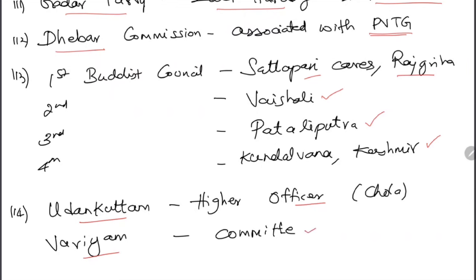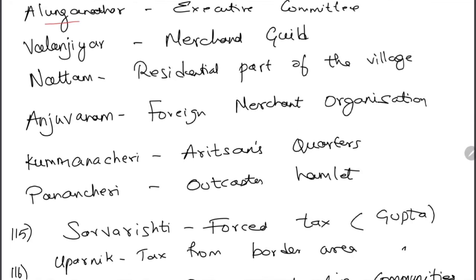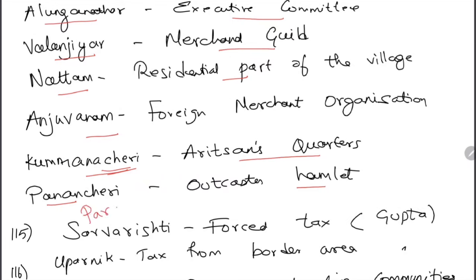Chola period terms: Wooden Kuttam was a higher officer. Variam means committee — even now in Tamil, variam means committee. Alangunadhar means executive committee. Valangai means merchant guild. Natam means residential part of a village. Anjuvanam means foreign merchant organization. Kumanacheri is artisans' quarters — 'cheri' means a place of residence. Panacheri is outcastes' hamlet.